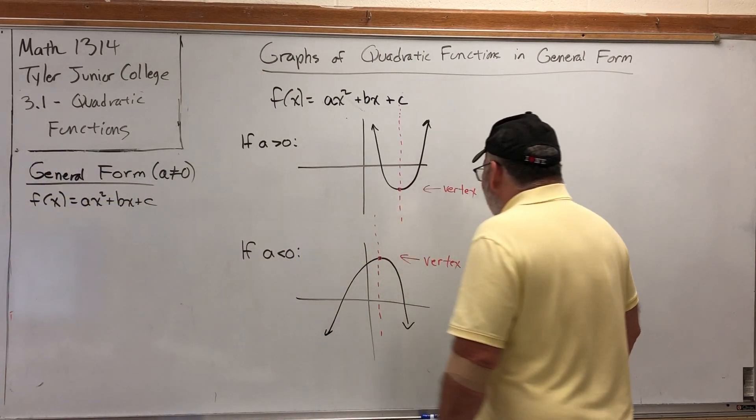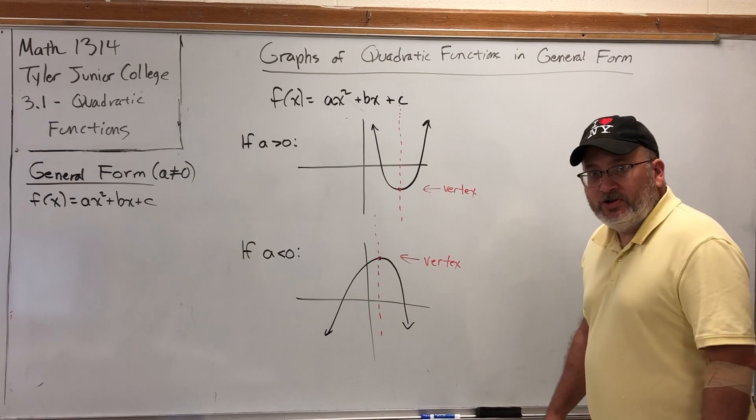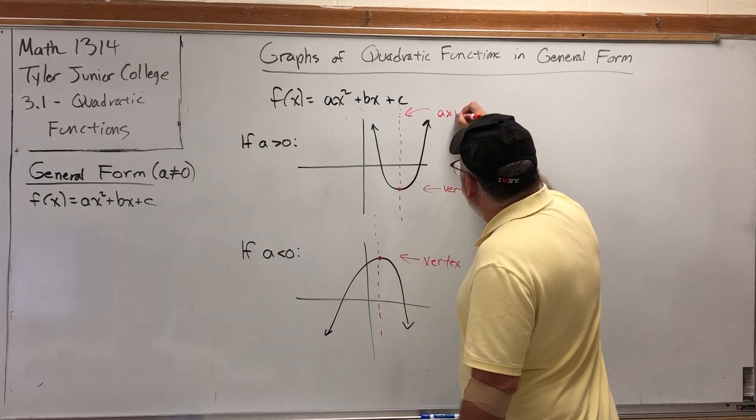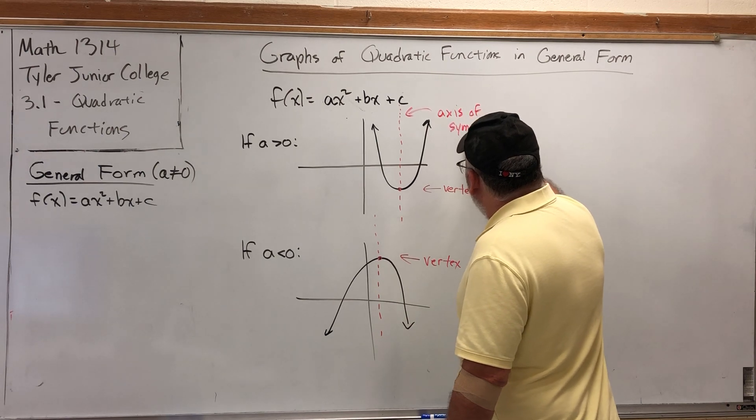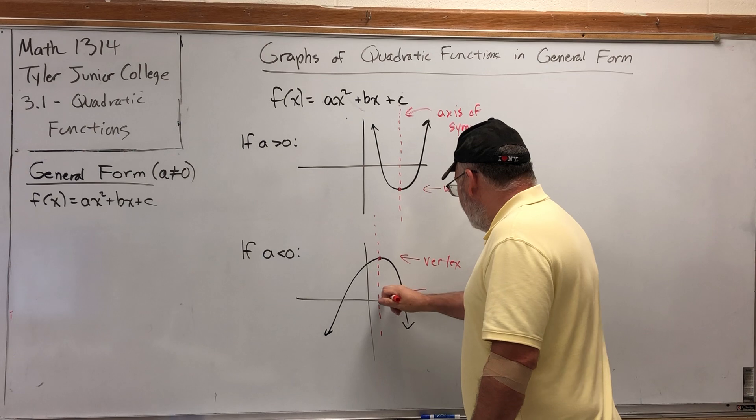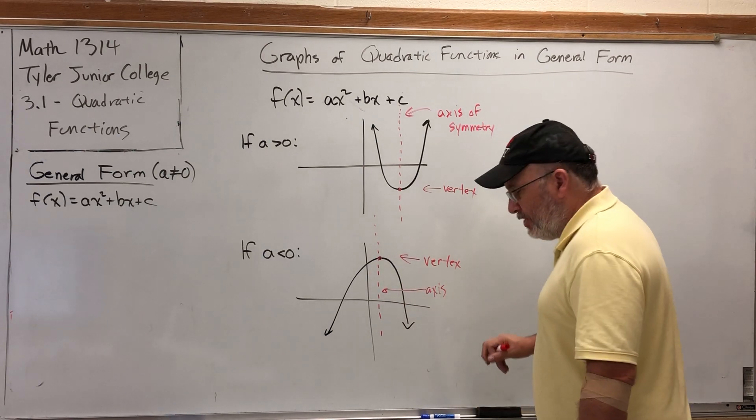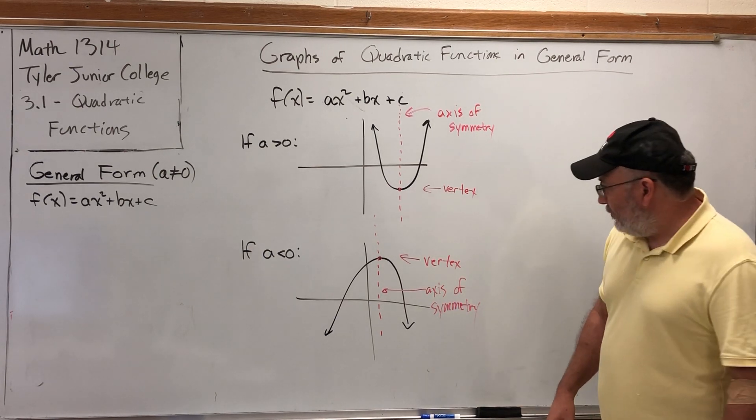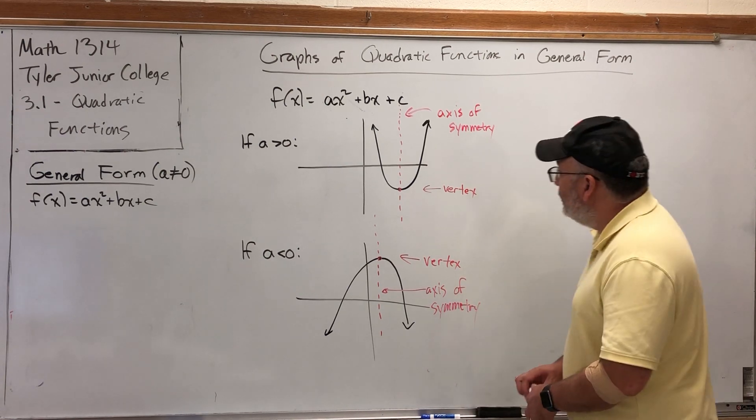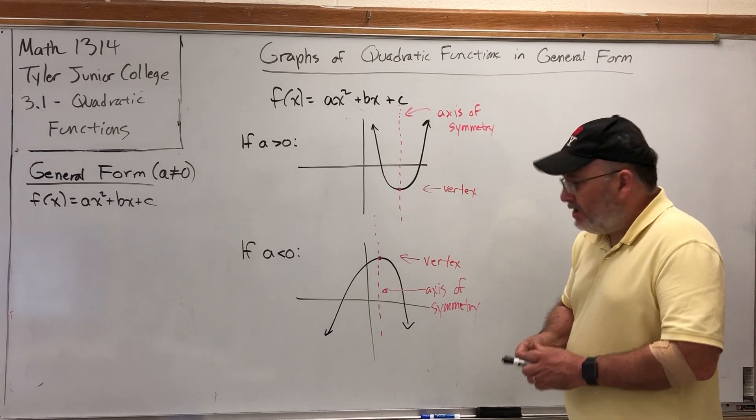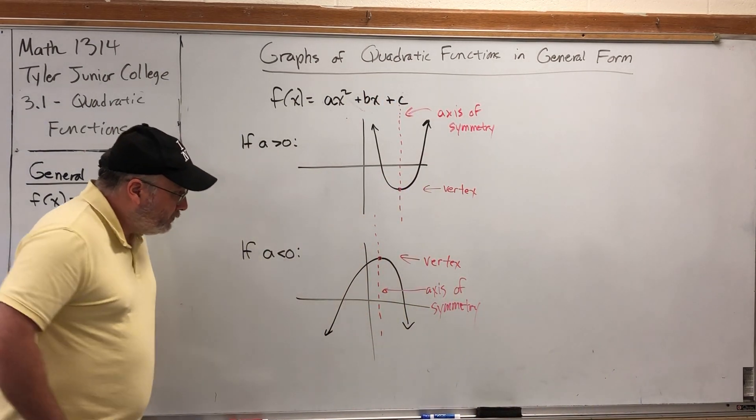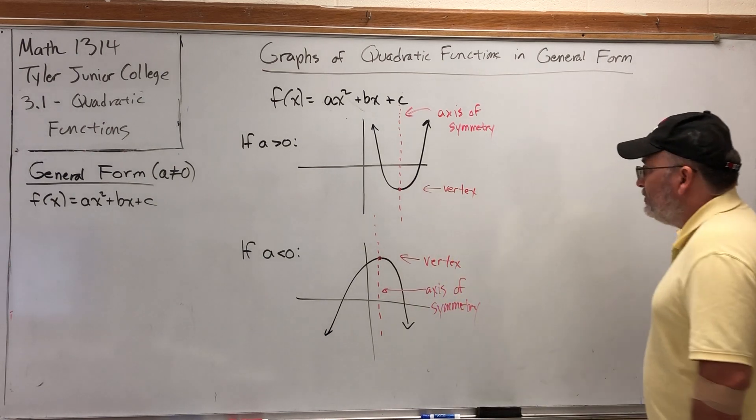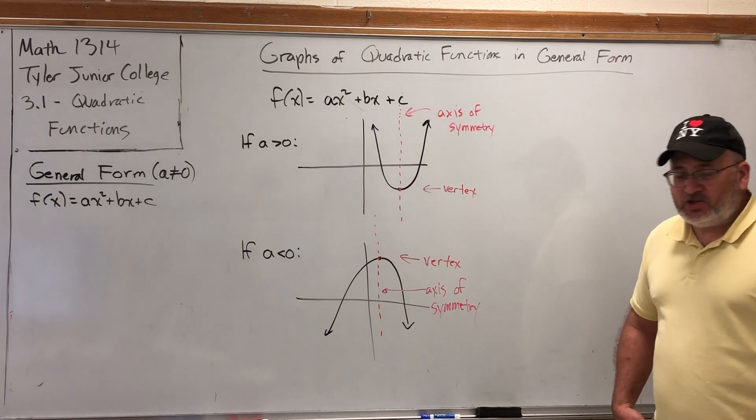This line that serves as a mirror for the left and right halves of the parabola is called the axis of symmetry. Since it's a vertical line, we know its equation is x equals a number. Whatever that number is, it's also the x-coordinate of the vertex. So if we can find the coordinates of the vertex in terms of coefficients a, b, and c, we can also find the equation of the axis of symmetry.